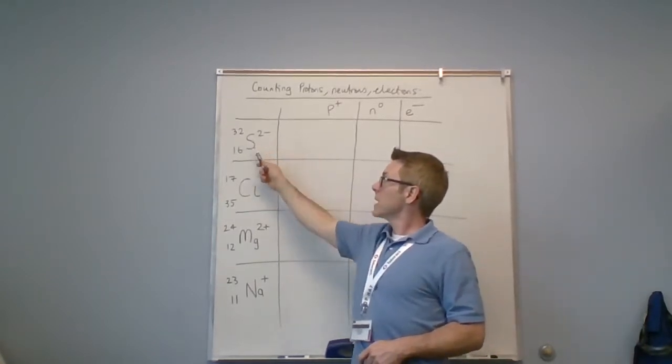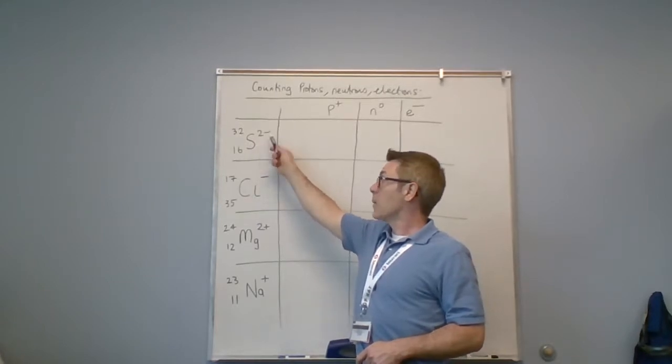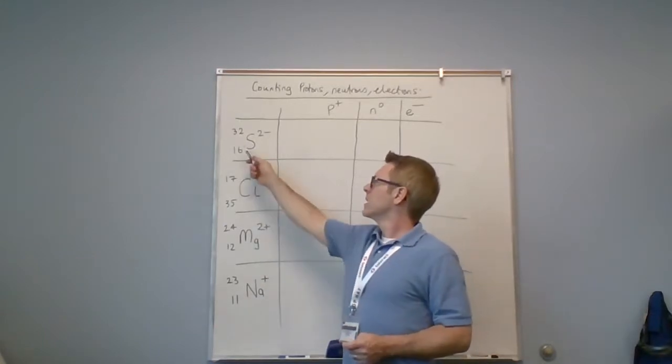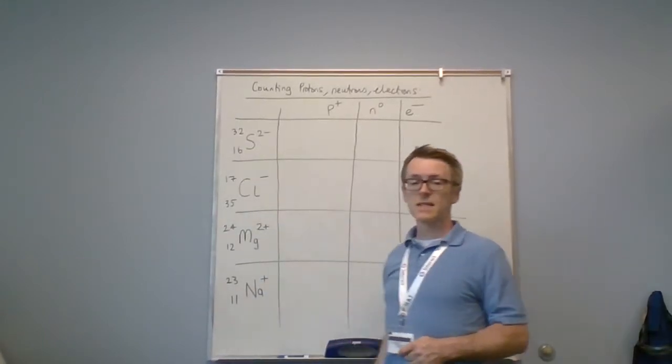Here we have S with two negative charges, and we have two numbers: 32 and 16. I would always start with protons. 16 is smaller than 32, so I know that 16 is the Z number, the atomic number, so I have 16 protons.